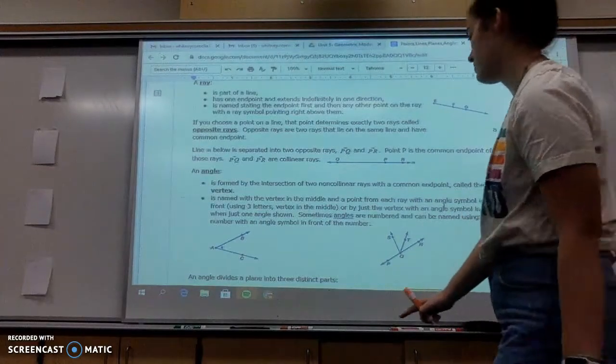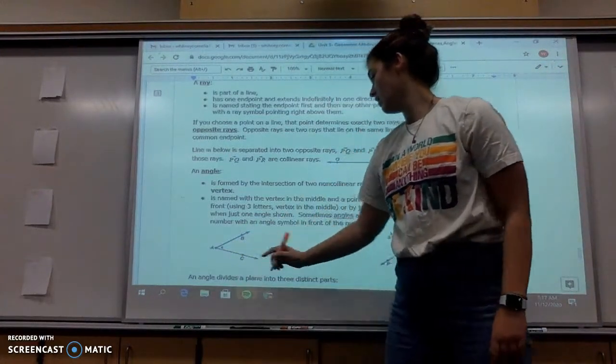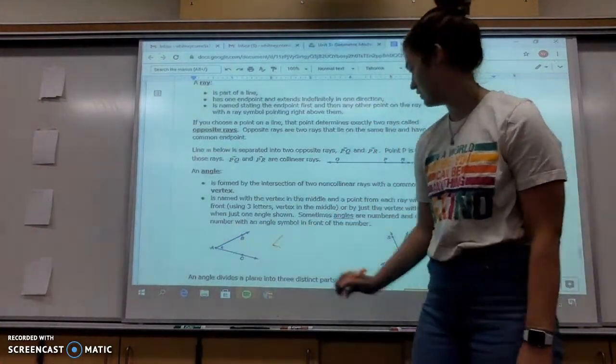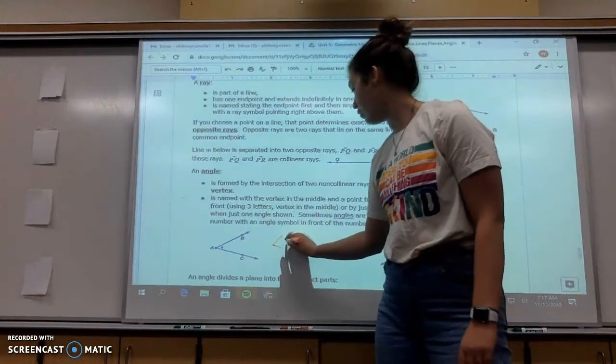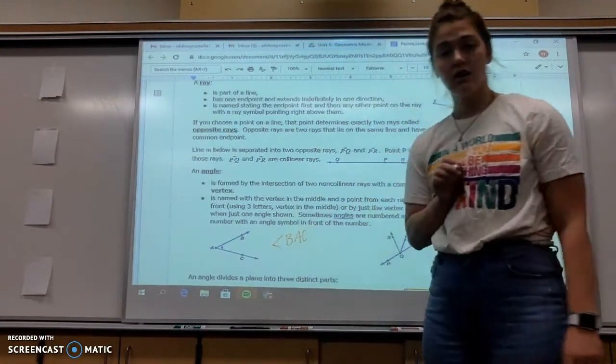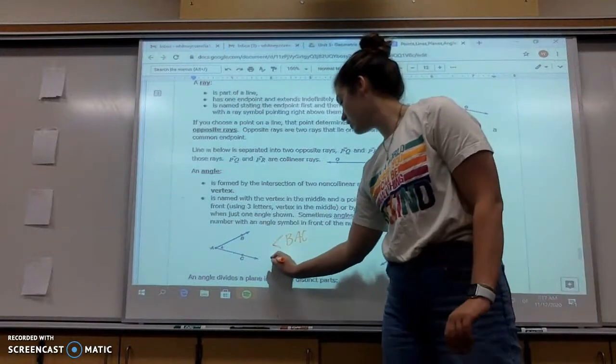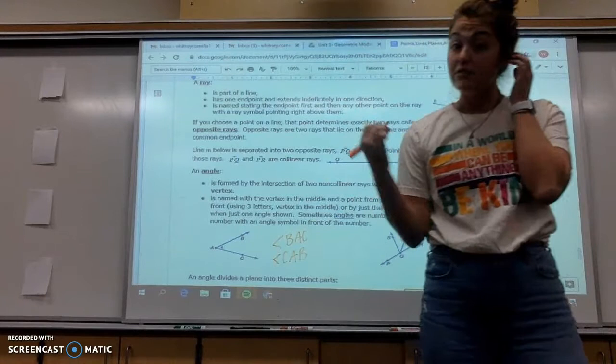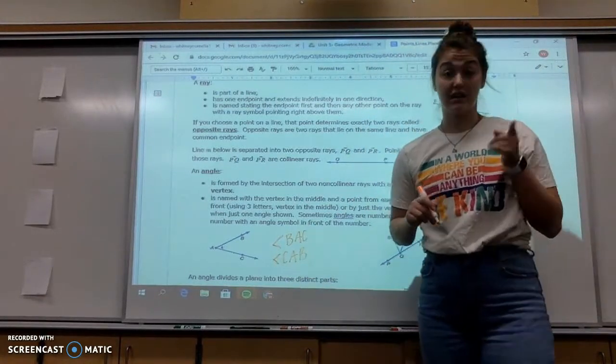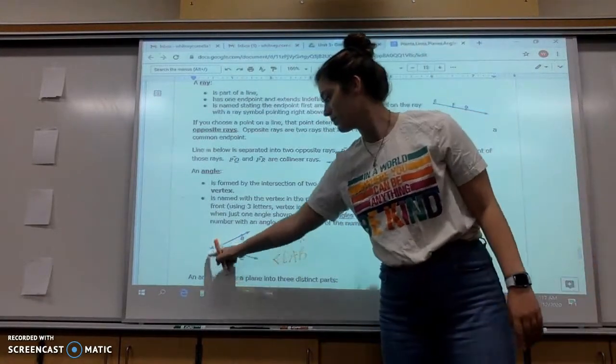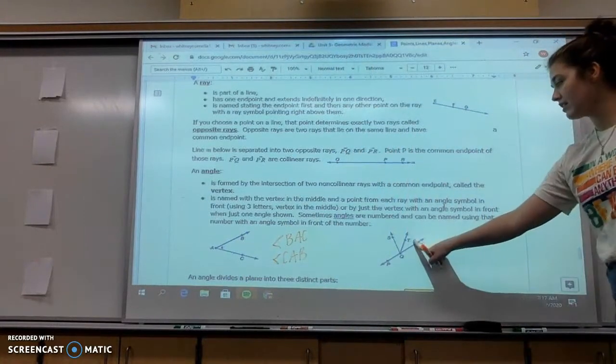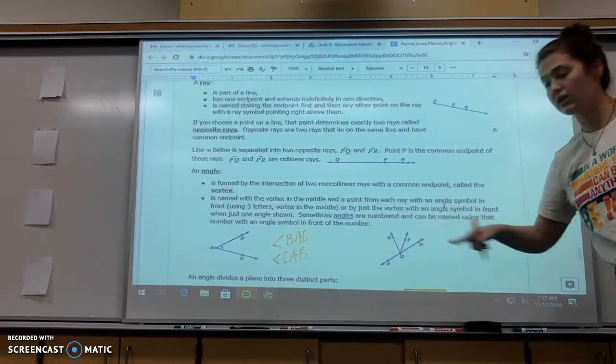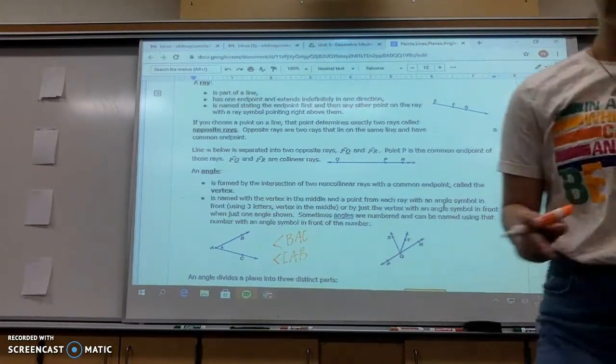So if we were going to name this angle, it would be this little angle symbol. Angle BAC, or we can name this angle CAB. Now notice that A is always in the center because it's my vertex right here. I want you to name the one, two, three angles that you see there on your own.